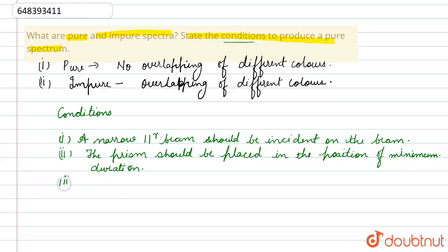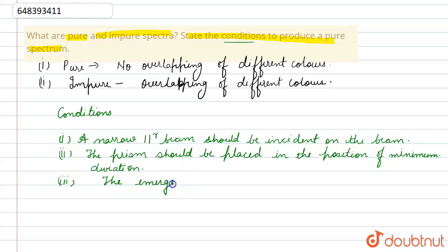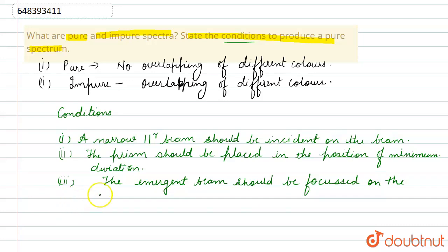The third condition is that the emergent beam should be focused on the screen. It should not be discrete and unfocused — if light beams fall on different portions of the screen, we will not get a pure spectrum.